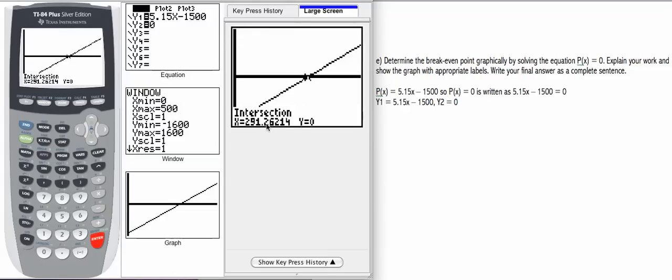And we do, 291.262. So in your work here on your paper, you should be drawing a good representation of this graph. And then round appropriately. We decided 292 was the actual number of deliveries we needed to make to break even. And then write a complete sentence to reflect that information. And then we'll see you next time.